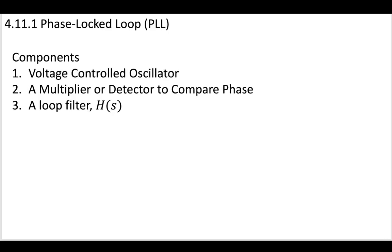The components of them are typically going to be a voltage-controlled oscillator, and this is going to be denoted as a VCO for most of this video. Then, a multiplier or detector to compare the phase. So you'll need some different way to compare the phase, as might be indicated by the fact that it says a phase-locked loop.